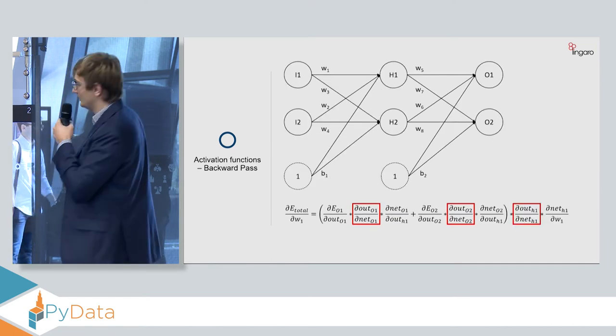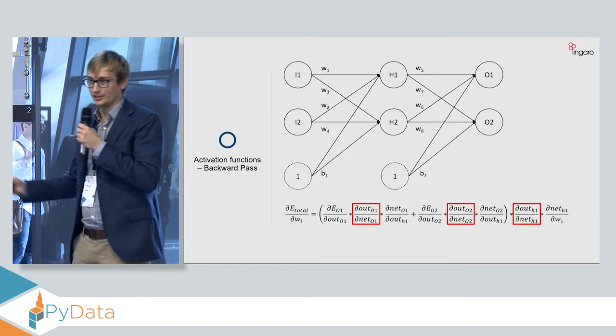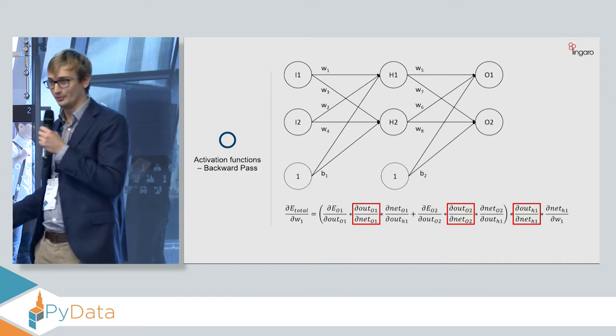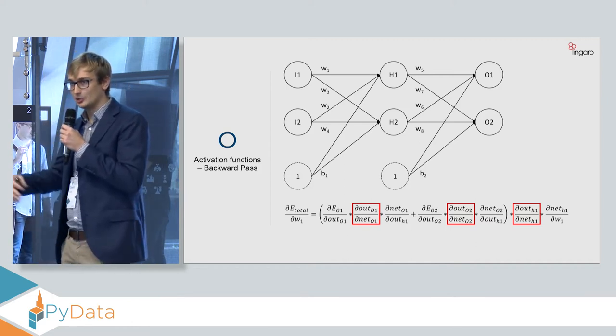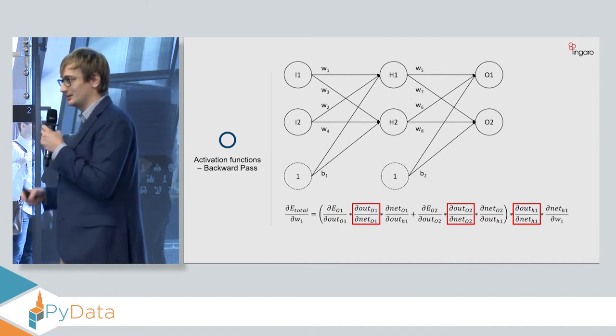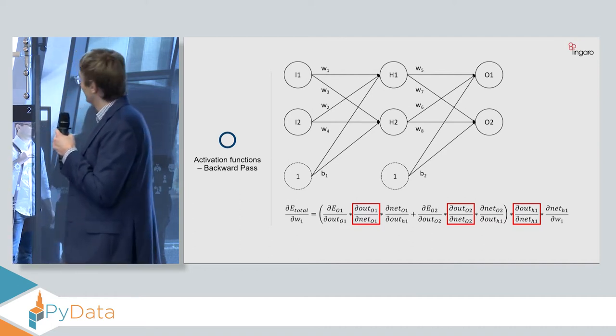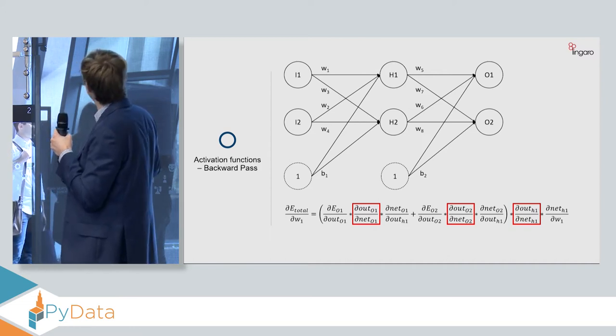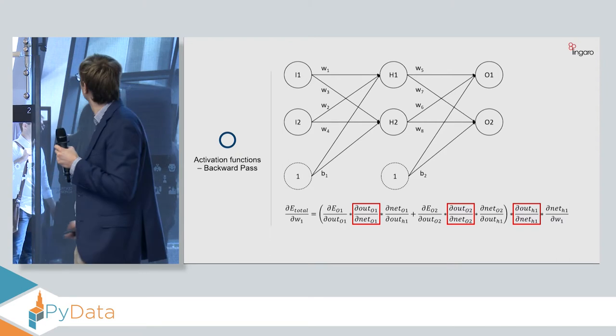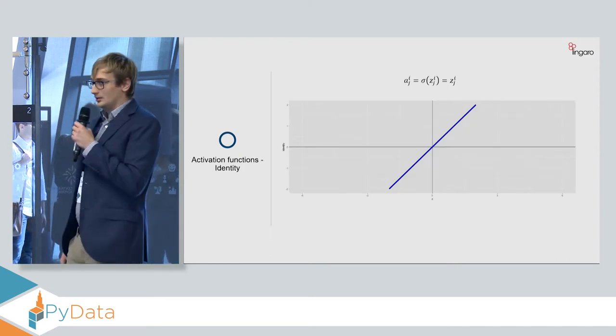So if we try to decompose the influence into particular steps, we can see that actually it's the derivative of the error with respect to the output of the neuron, times the output, the derivative of the output with respect to the net value, and the derivative of the net value with respect to the weight. So here we are talking about this part of the neural net.